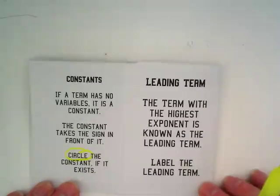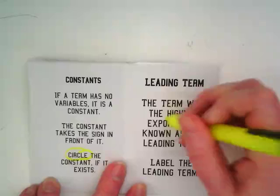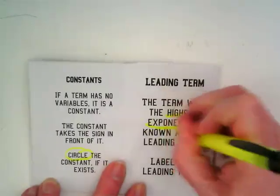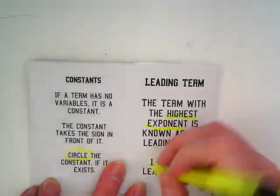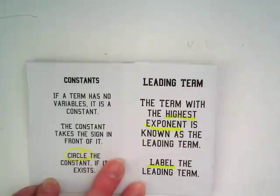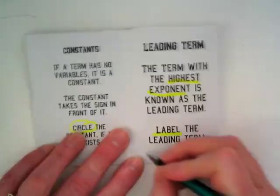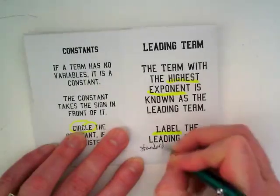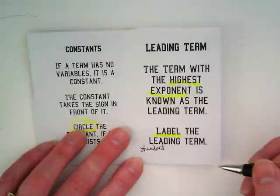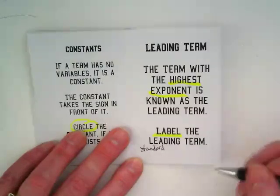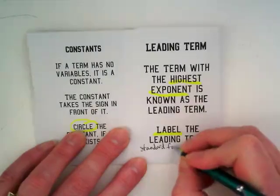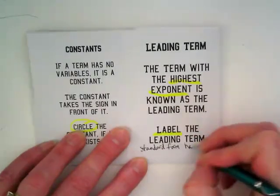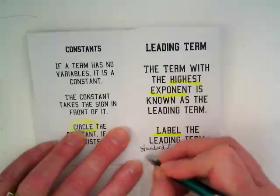This one here, we're going to actually add a little bit of notes to. Leading term. The term with the highest exponent is known as the leading term. We will label the leading term. What I'd like you to write down here, standard form, and this is not Ax plus By equals C. Standard form of polynomials has the leading term in front.